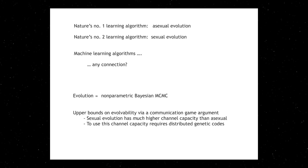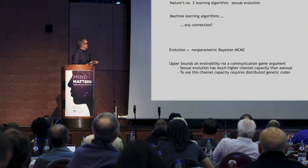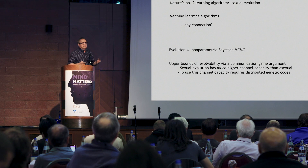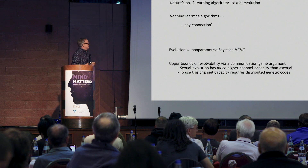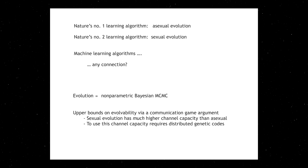It struck me that nature's number one learning algorithm is asexual evolution. And then, perhaps a billion years after that started, we have nature's number two learning algorithm, which is sexual evolution. These are both kinds of adaptive algorithms. I come from machine learning, and there is almost no recognized overlap between these and machine learning. This struck me as very strange.